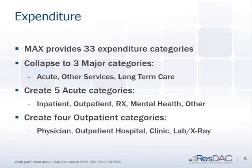Under acute, we create five categories: inpatient, outpatient, pharmacy, mental health, and other. Within outpatient, you can look at physician, outpatient hospital, clinic, laboratory, and x-ray. This gives you an idea of different ways to cut the data.